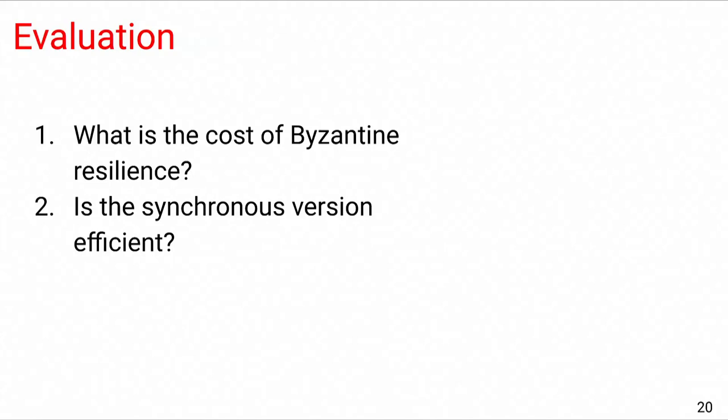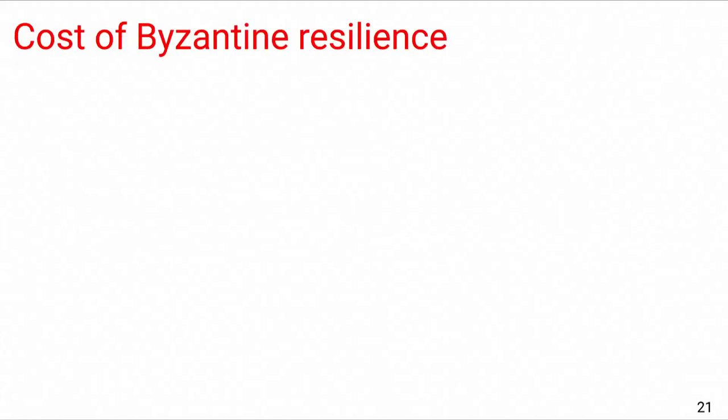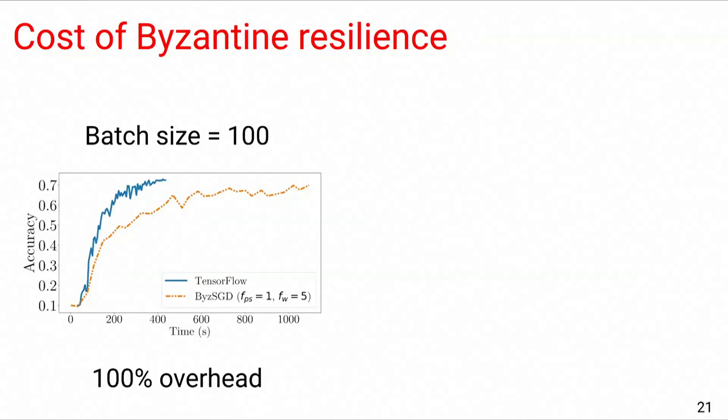Now let's move to the last part of our presentation in which we experimentally evaluate our algorithms. Basically, we are interested in two main questions. The first one is, what is the cost of Byzantine resilience? And the second one, is the synchronous version really efficient compared to the asynchronous one? To answer these questions, we implemented BizSGD with TensorFlow and we used our implementation to solve an image recognition task using the popular CIFAR-10 dataset. In the first set of experiments, we deployed BizSGD while using one Byzantine server out of four and five Byzantine workers out of 20. We compare this with vanilla TensorFlow, which is our baseline here. On the y-axis, we measure the accuracy, which is a measure of how good the model is in predicting the images' labels. On the x-axis, we put the time it takes to achieve accuracy.